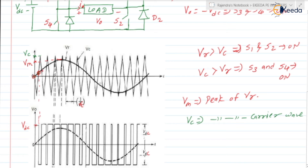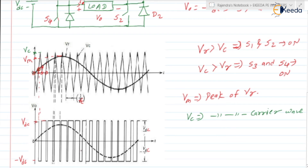From this point to this point, VR is less than VC, so the output will be −VDC. Similarly, again when VR is greater than VC from this point to this point, output is again +VDC. Corresponding to each cycle, it consists of the positive value of supply voltage as well as the negative value — positive pulses VDC and negative pulses VDC.